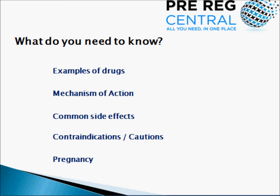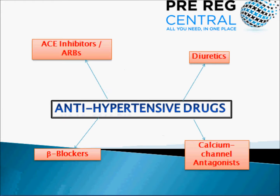Firstly we will discuss ACE inhibitors. Examples of ACE inhibitors include enalapril, ramipril and captopril. These drugs basically prevent the formation of angiotensin 2 which ultimately causes vasodilation and thus lowers blood pressure.